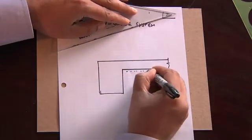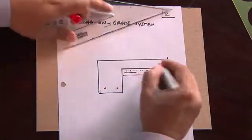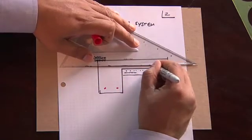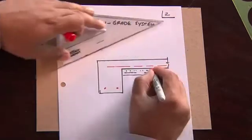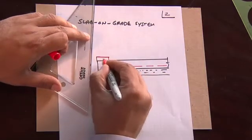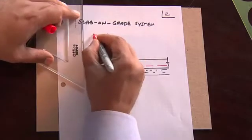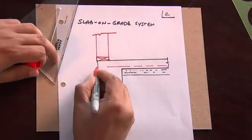And you usually have some crushed aggregate here with a visqueen membrane. I'll use some different colors here. You'll have some steel in here. You'll have, you're supposed to have steel in the slab, although that's not always been done. And then you have your framing elements for your wall and your dirt line.